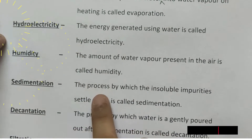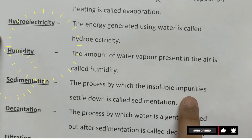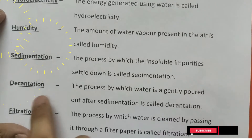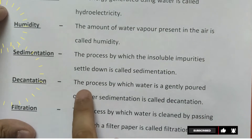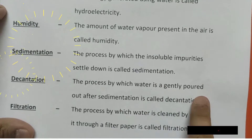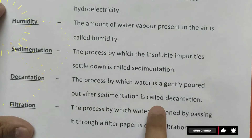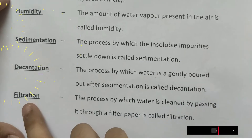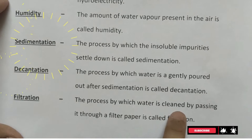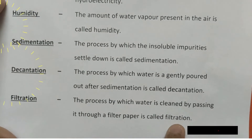Sedimentation: the process by which the insoluble impurities settle down is called sedimentation. Decantation: the process by which water is gently poured out after sedimentation is called decantation. Filtration: the process by which water is cleaned by passing it through a filter paper is called filtration.